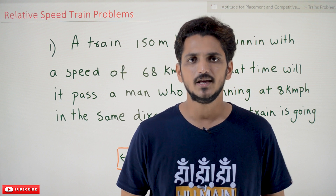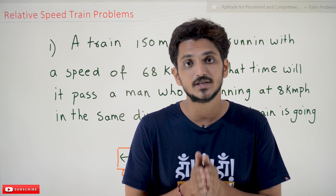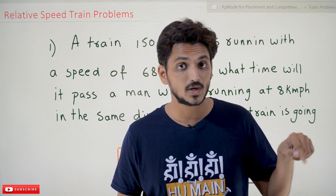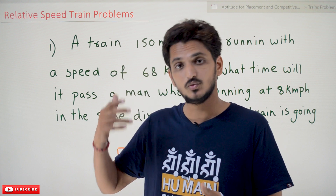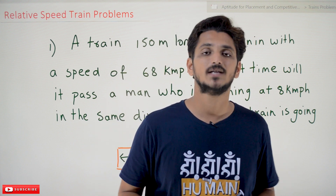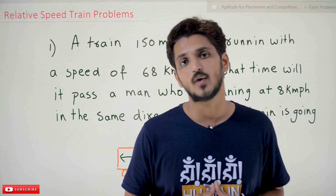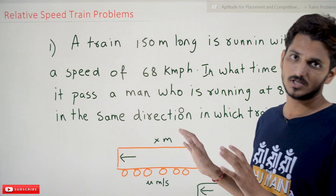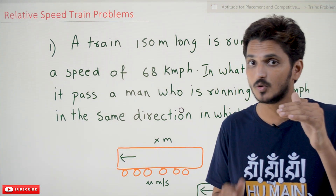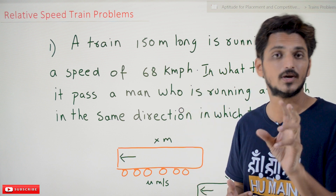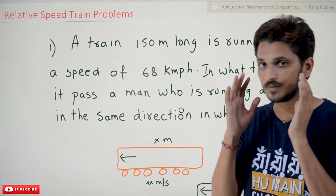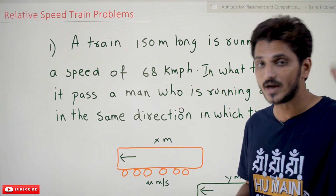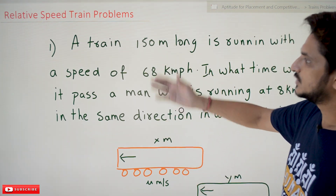Hi! Welcome to Learning Monkey. I am Raghuvir. In this class, we discuss a few examples on relative speeds of trains problems. In our previous class, we already discussed the formula required to solve these examples. Please watch that class and come back here — the link for the playlist is provided in the description below. Whenever you are solving aptitude questions, you should have the graphical intuition about how we got these formulas; simply remembering will not help. Please watch that class.